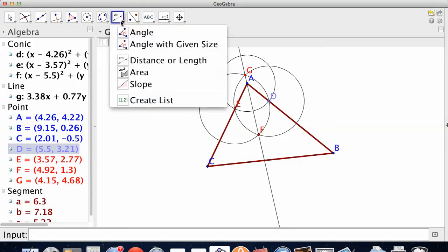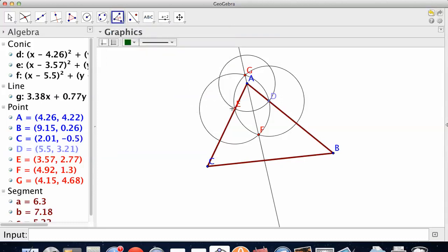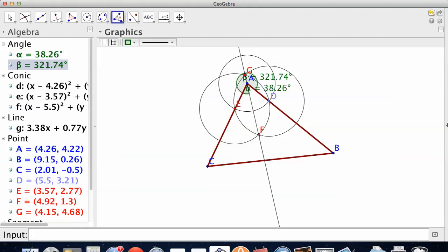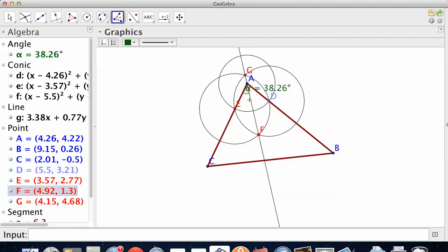Now, it should be a bisector because I made the twins the same size. So let's measure it. Let's go E, A, F. 38.26. And D, A. I just did this the wrong way, didn't I? Yes, I did. F, A, D.